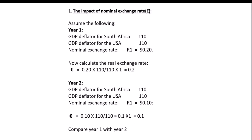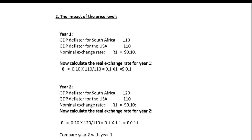Although the nominal exchange rate decreased from 0.2 to 0.18 between year one and year two, we still have a real appreciation. This occurred as a result of the increase in the domestic price level relative to the foreign price level — South Africa's price level went from 140 to 180, while the USA went from 110 to 120.